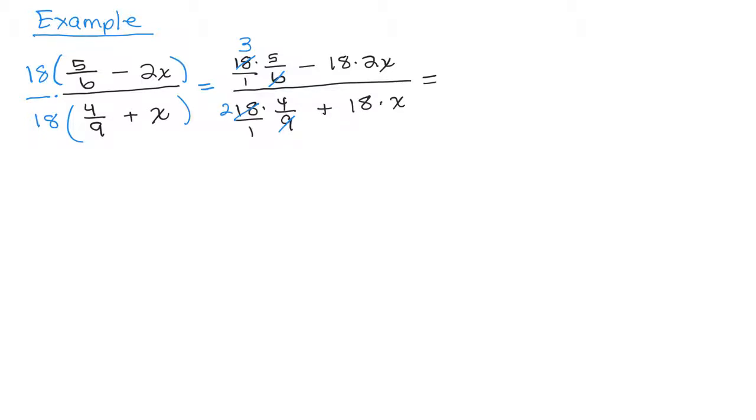So 3 times 5 is 15, 18 times 2x is 36x, and then in the denominator I have 2 times 4, which is 8, plus 18x.